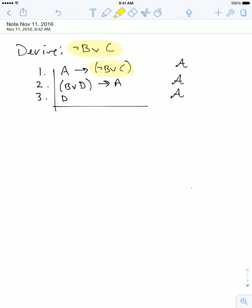Now when that happens, the most likely path to success for this derivation is to try to derive our target sentence by eliminating the main logical connective in the sentence in which it appears. So in this case, what we're going to try to do is eliminate this material conditional here so that we can get not B or C.